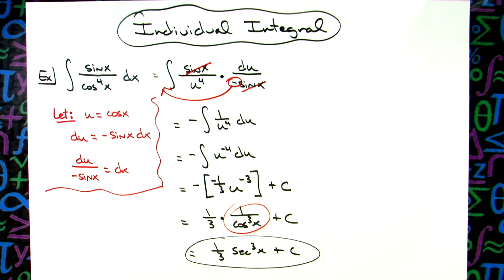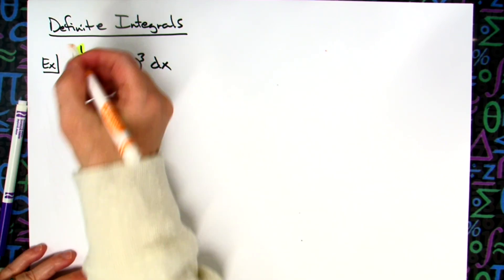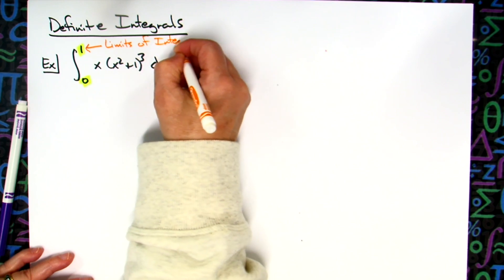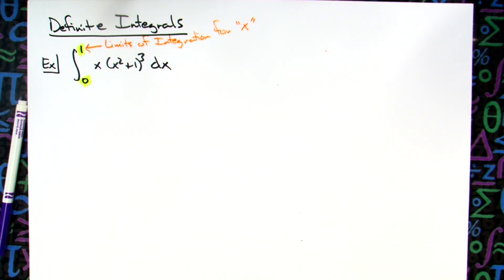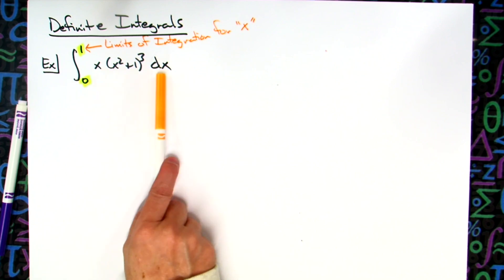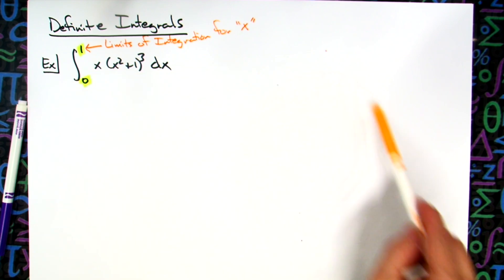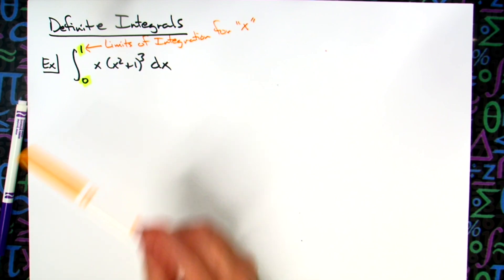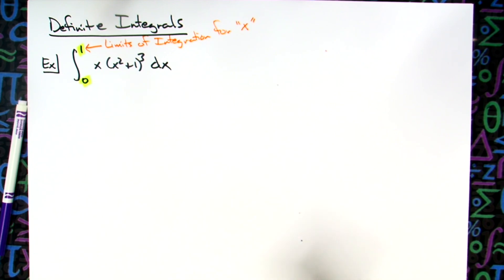I'm going to highlight the one and the zero because we need to emphasize these are limits of integration for x. Very, very important concept to understand. This is all written in terms of x — I've got a dx going on here. These are limits of integration for x. Now if we're doing u-substitution, eventually I end up writing somewhere over here an integral in terms of u, so I'm no longer in terms of x. I have to get rid of those two numbers when I'm using my u equation because they are not the same.